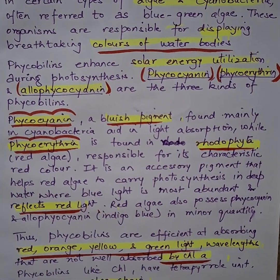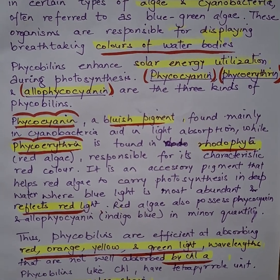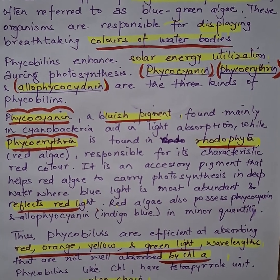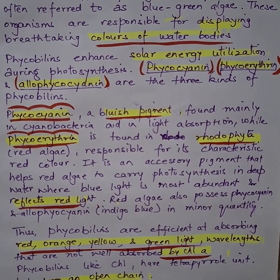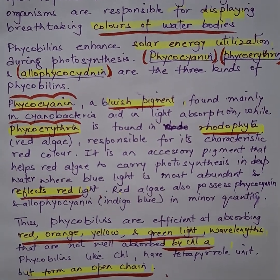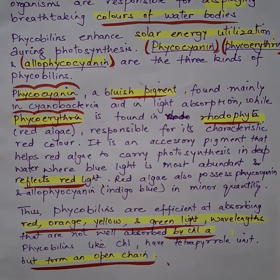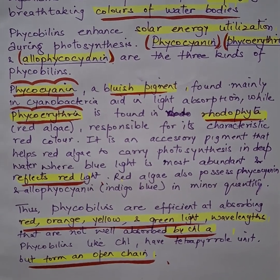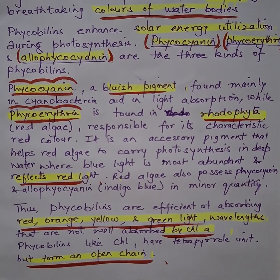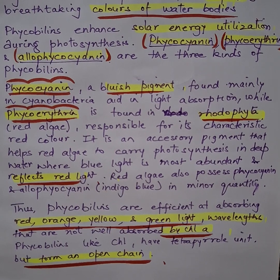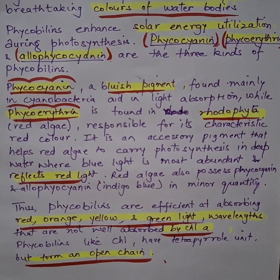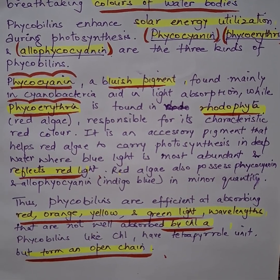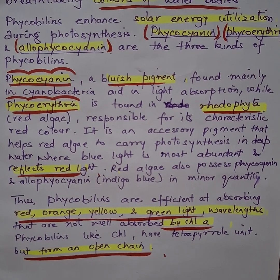Common examples are phycocyanin, phycoerythrin, and allophycocyanin. Phycocyanin is a bluish pigment found in cyanobacteria which aids in light absorption, while phycoerythrin is found in red algae and is responsible for its characteristic red color.